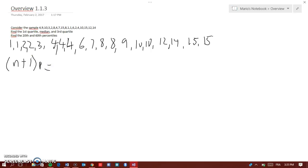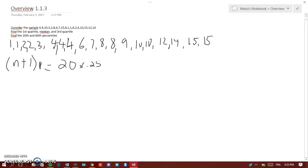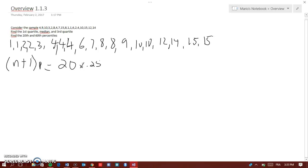And because you have 19 numbers here, so 19 plus 1 is 20, 20 times p, p is the first quartile, which is 25 percent, so times 0.25. So, remember that, it's n plus 1, n is the number of your sample, plus 1, and then times the percentile you're asking.